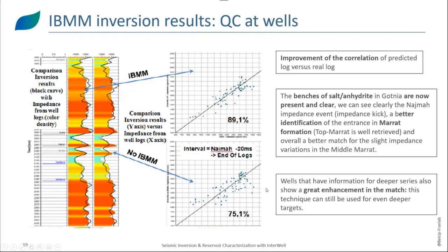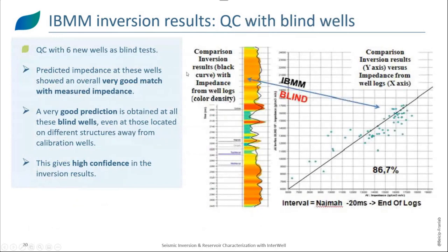Another QC we performed is with the blind wells. We had six blind wells in our study used as blind tests. The inversion results are shown as the black curve, and the measured impedance is in color. We have a good match — 86 percent correlation in the chosen interval — a good prediction obtained even with blind wells that were away from the structures where the calibration wells were present. These results give us higher confidence in the inversion results.